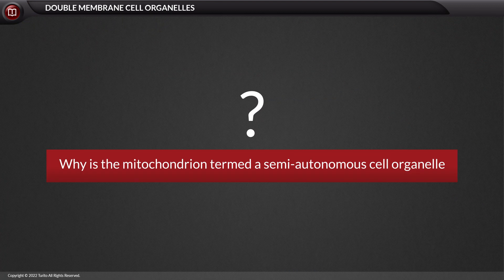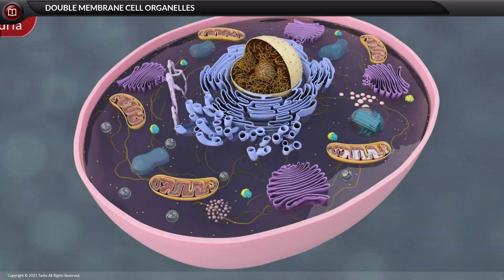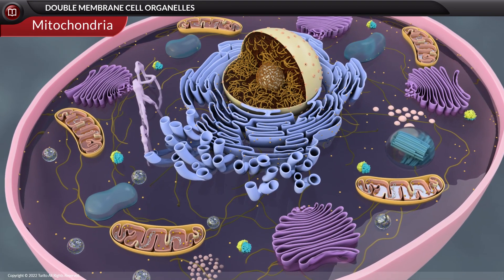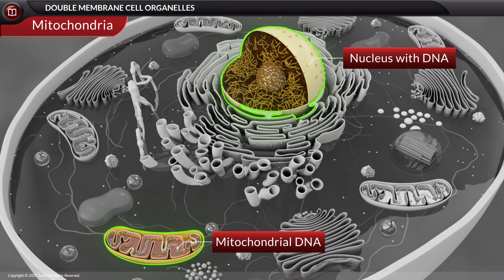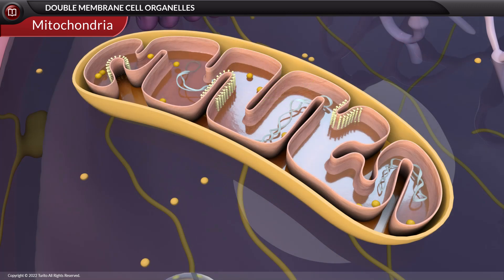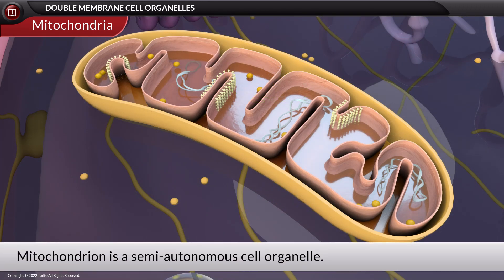Why is the mitochondrion termed a semi-autonomous cell organelle? Though mitochondrion has its own genetic material, it is still dependent on the nuclear DNA for certain functions like replication and transcription of its own DNA. This makes the mitochondrion a semi-autonomous cell organelle.